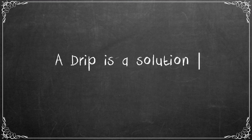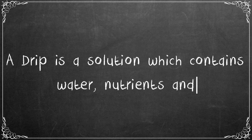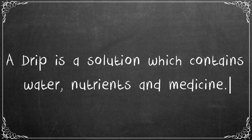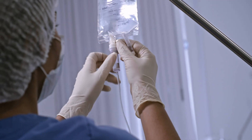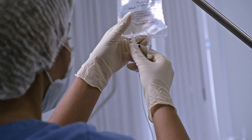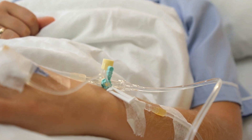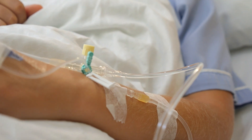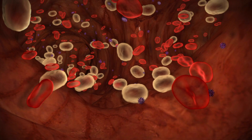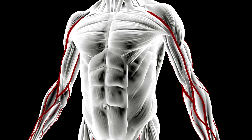What is a drip? A drip is a solution which contains water, nutrients and medicines. A tube attached to the drip enters into the arm of the patient, and the food enters through the veins to all the parts of the body.